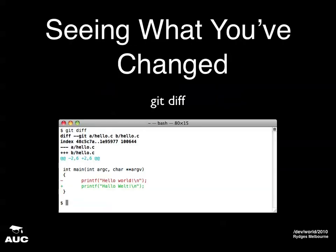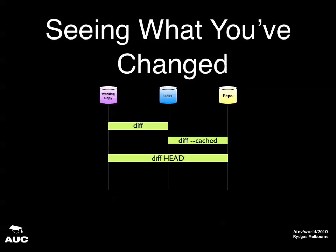Next up is seeing what you've changed — you do that with 'git diff'. In the example, the red is the line that was taken out and the green is the line that was added. So I've changed my Hello World program from English to German. You also have 'diff --cached', which shows the changes between what you've staged and the most recent checkout. 'diff' shows what's changed between your working copy and the index; 'diff --cached' shows what's changed between the index and the repository; and 'diff HEAD' is the way you bypass the staging area.